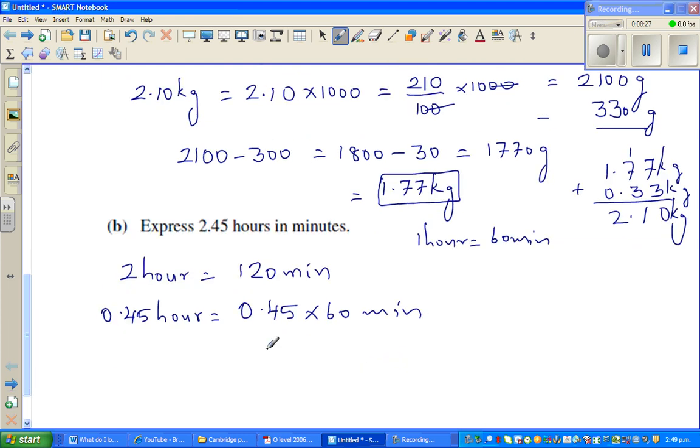This is 45 out of 100 times 60 over 1. So this is 45 times 60 over 100. I'm dividing both by 5. So 5 goes in 45 nine times. 5 goes in 100 twenty times. And 2 goes in 60 three times. So this is 27 minutes.